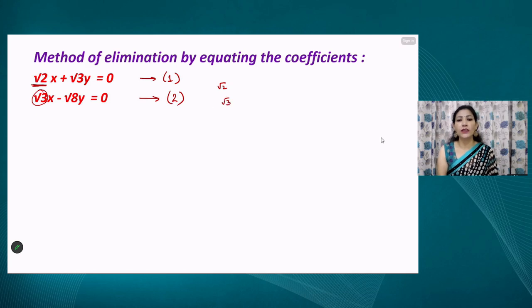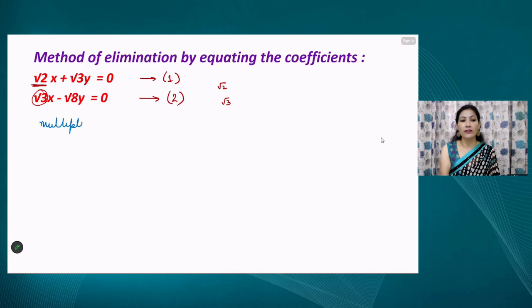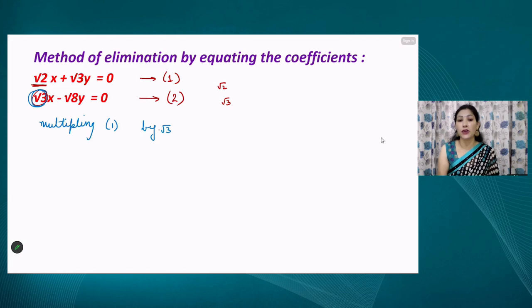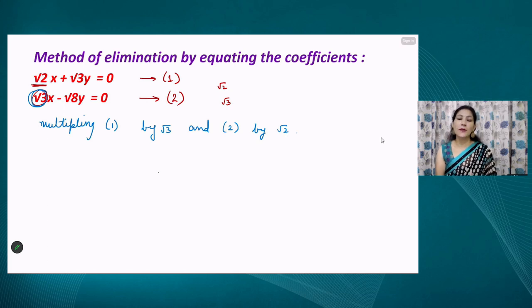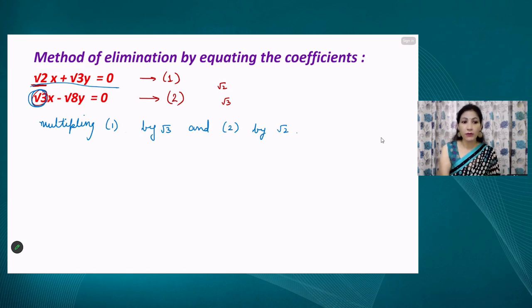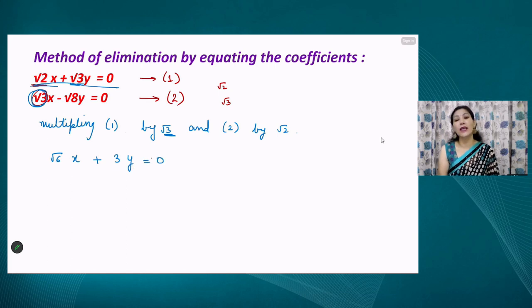To equalize the coefficients of x in both equations, we multiply equation number one by √3 — the coefficient of x in equation two — and multiply equation number two by √2. The first equation now becomes √6x + 3y = 0, since √3 × √3 = 3. Each and every term is multiplied by the same value, so the right-hand side 0 multiplied by anything remains 0.